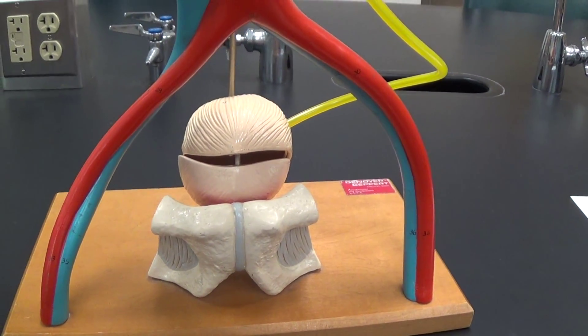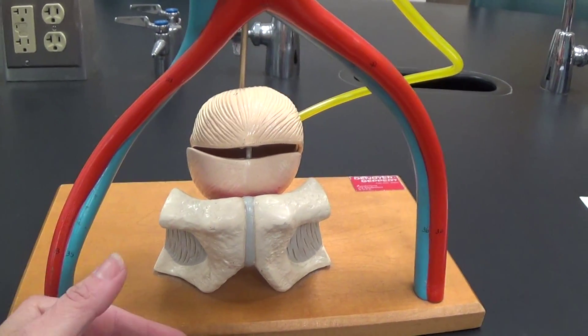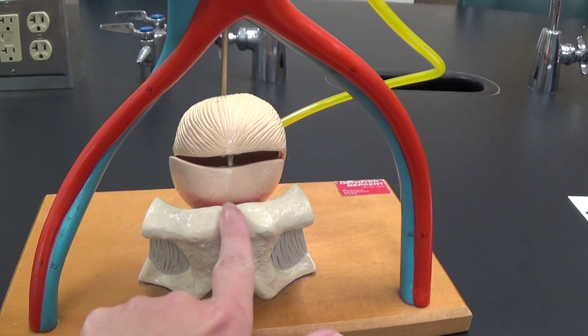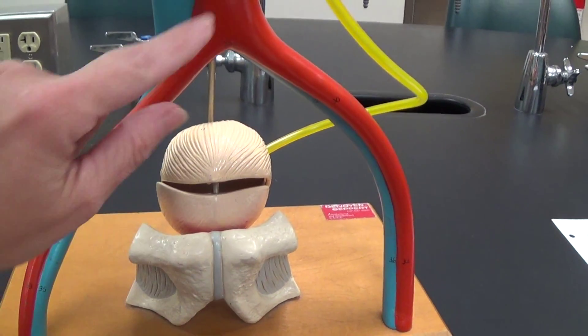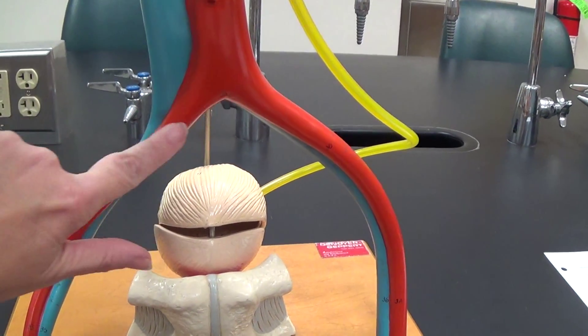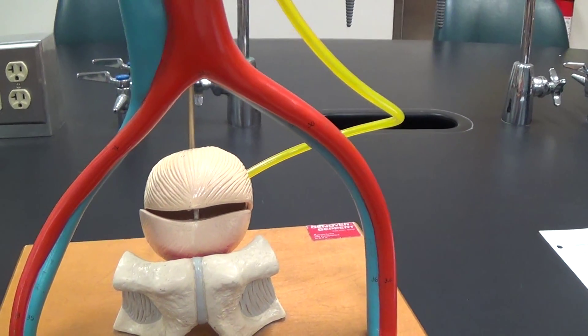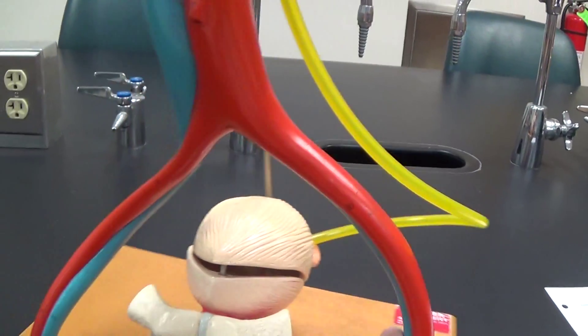Now, that is the bladder, but I want to point out that this is the anterior side. This is the pubic symphysis that we see here. This split in the aorta represents our common iliacs and then our external iliac arteries and veins.